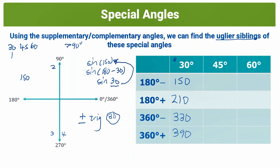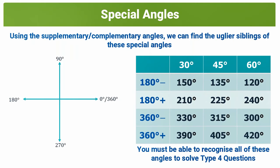And for 45, if we say 180 minus 45, that's 135. Plus is 225. And 360 minus, that's 315, and 360 plus is 405. We can do the same thing with 60. That's going to be 120, 240, 300, 420. And along with knowing the values of your special angles, I'd really recommend learning the ugly siblings of 30, 45, and 60 because it's really important for you to be able to recognize each of these angles in a type 4 question which we will go on to do in the next video and you'll see why it's so important to recognize each of these angles.